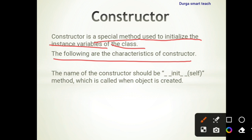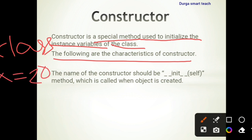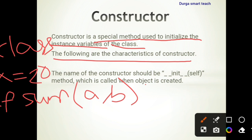A constructor is a function which is used to initialize the variables whenever the object is created. We know a class contains variables and methods. For example, suppose we have a function 'sum' with parameters a and b.